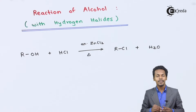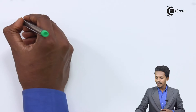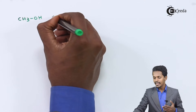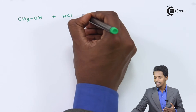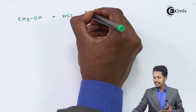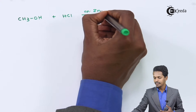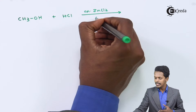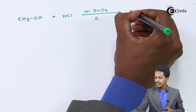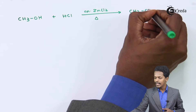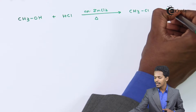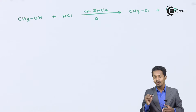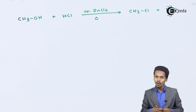For example, if we consider CH3OH, that is methanol, and react it with HCl using anhydrous ZnCl2 — which is Lucas reagent — the product we get is CH3Cl along with H2O as a byproduct. We have to provide high temperature for the product to form.